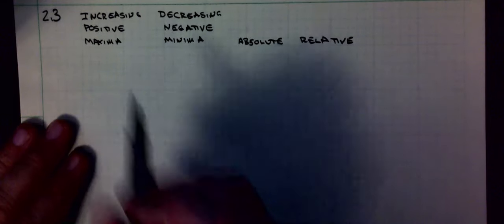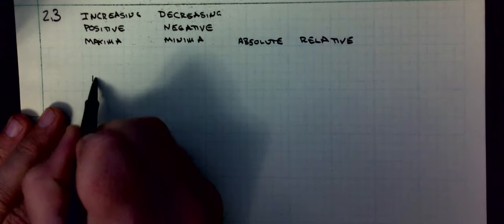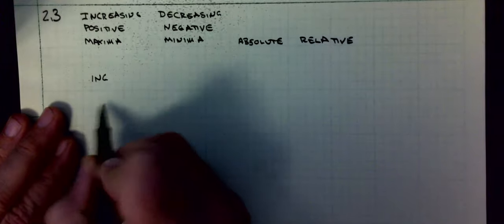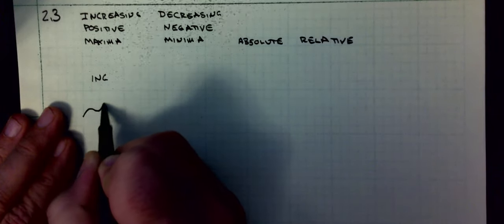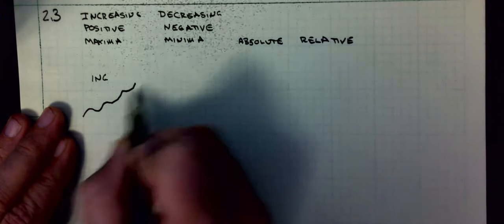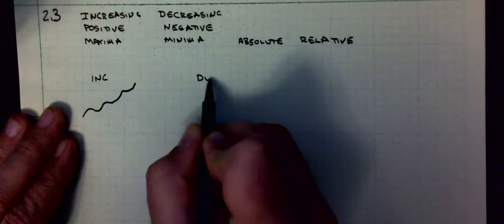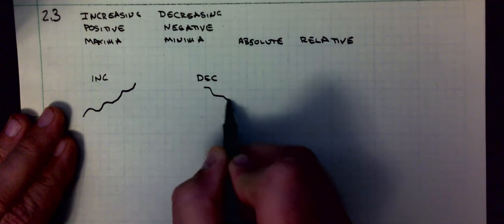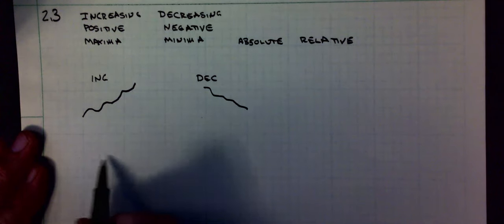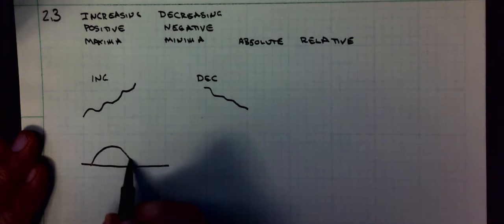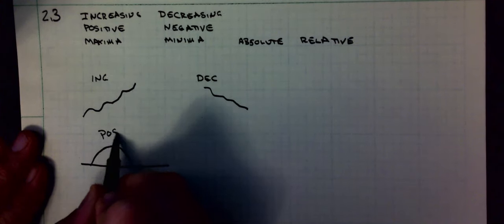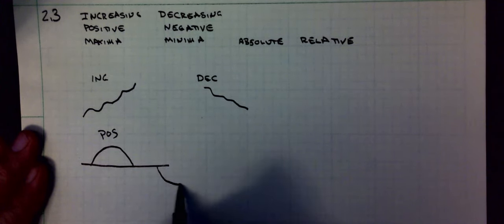Basically, the key things: increasing functions, that means when it's going uphill to the right, so that's always going uphill. Decreasing when it's going downhill to the right. Positive is when it's above zero. Negative is below zero.